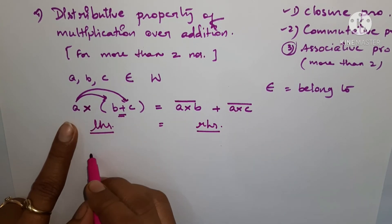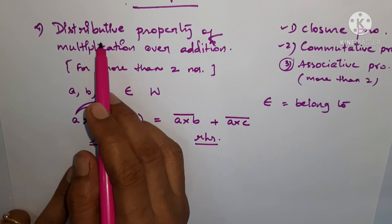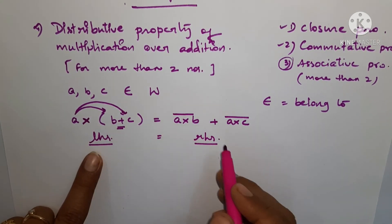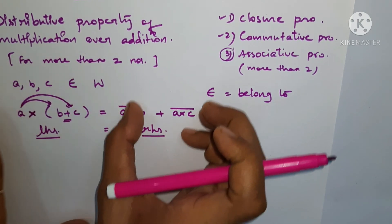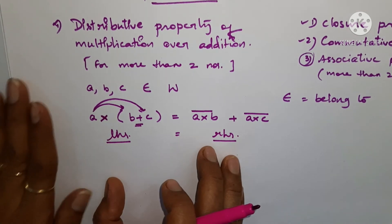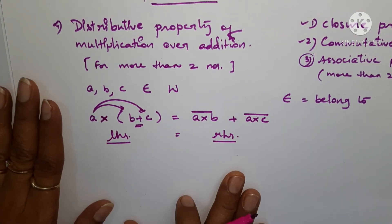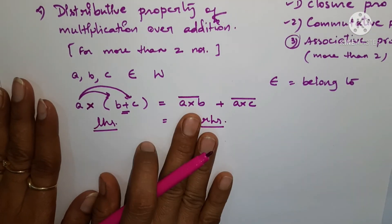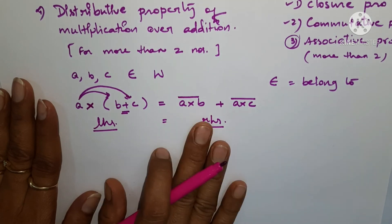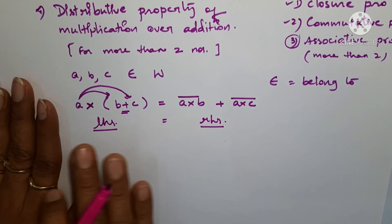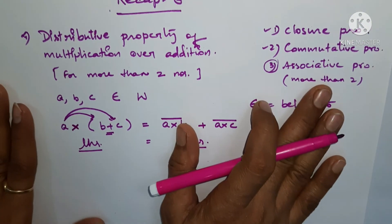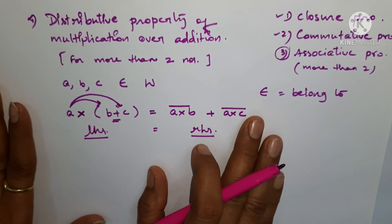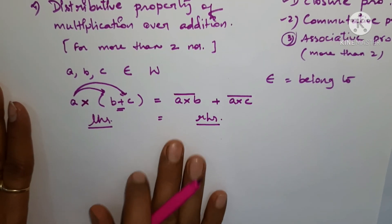If the LHS is provided in question form, when you apply the distributive property you will change it to the right-hand side form. And if the question format is given in the RHS form, you simply change it to the LHS form. This is specifically relevant in the distributive property while solving questions.